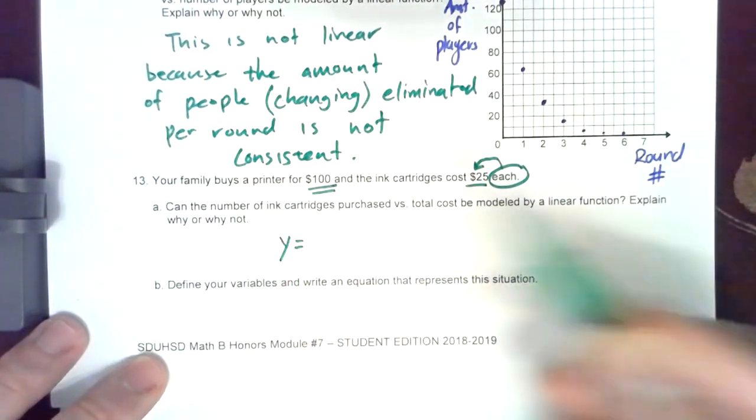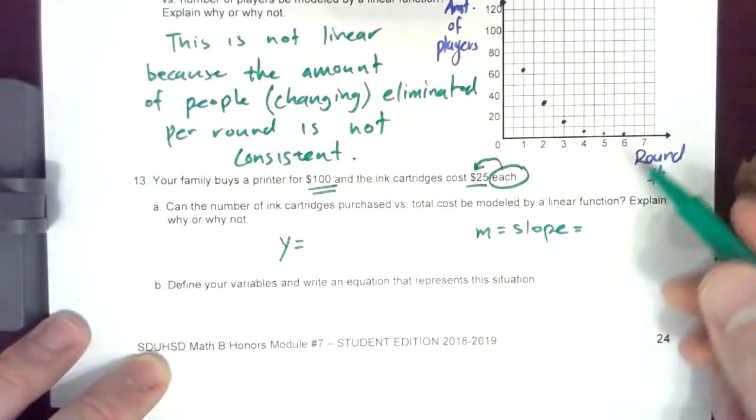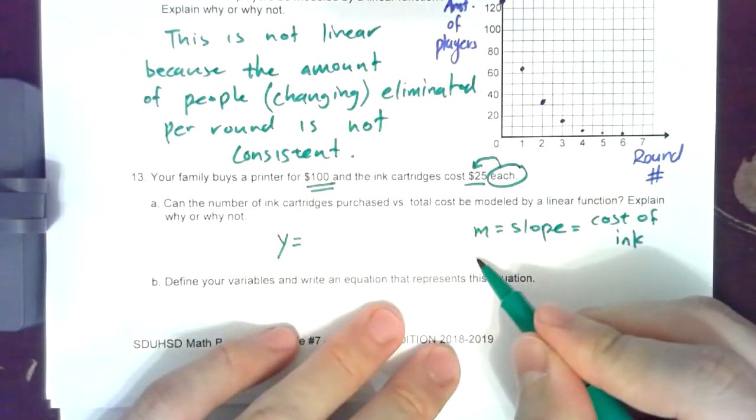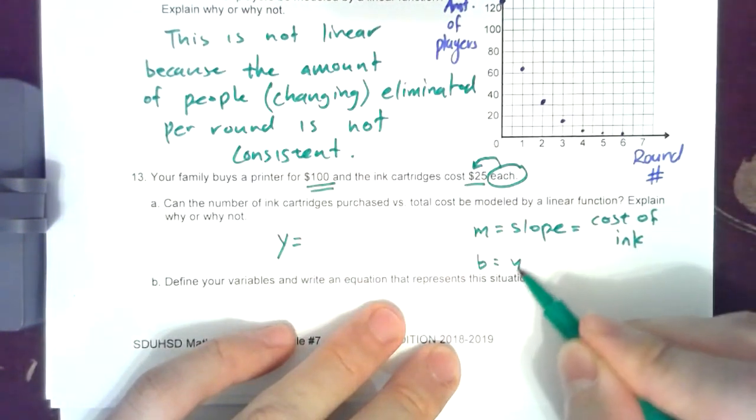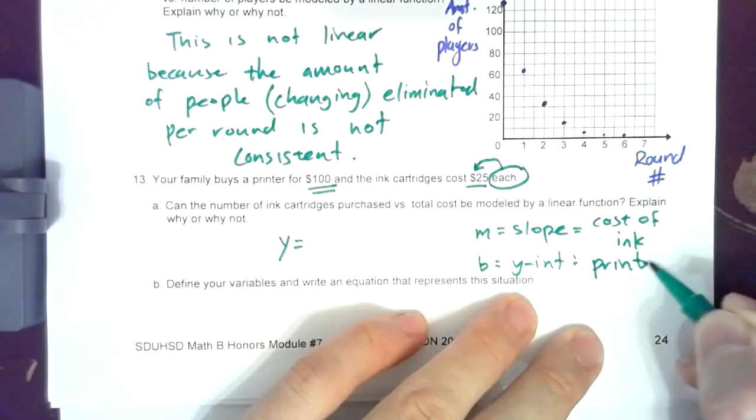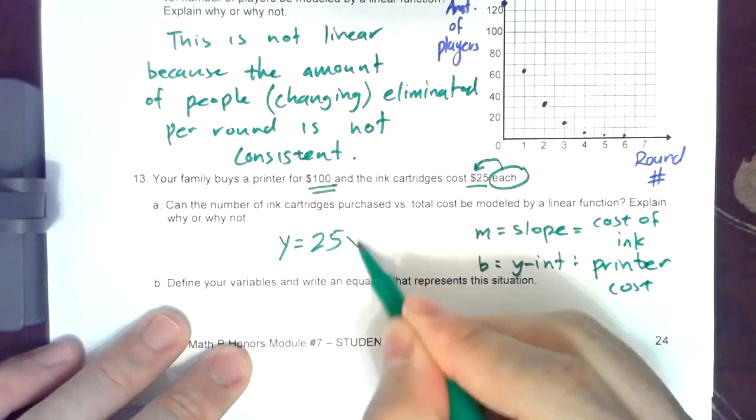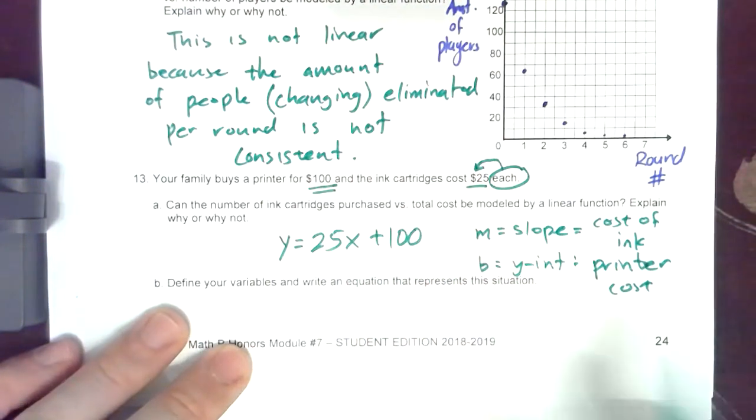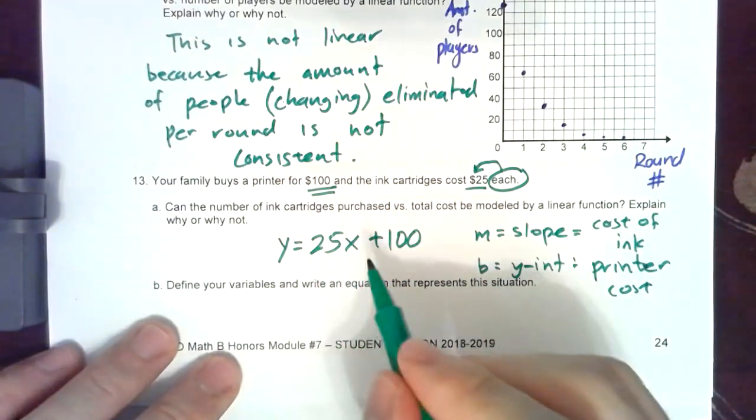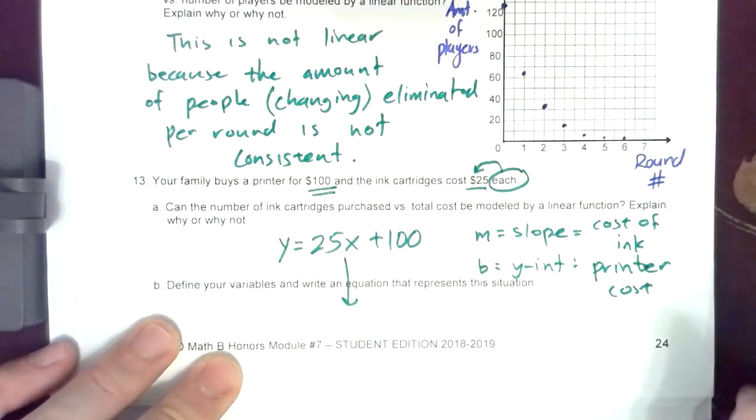We kind of know that the slope m is going to equal the cost of ink. And then the b value which is your y-intercept is going to be your printer cost. You have to buy a printer, it's just one initial fee and you get 25x plus 100.